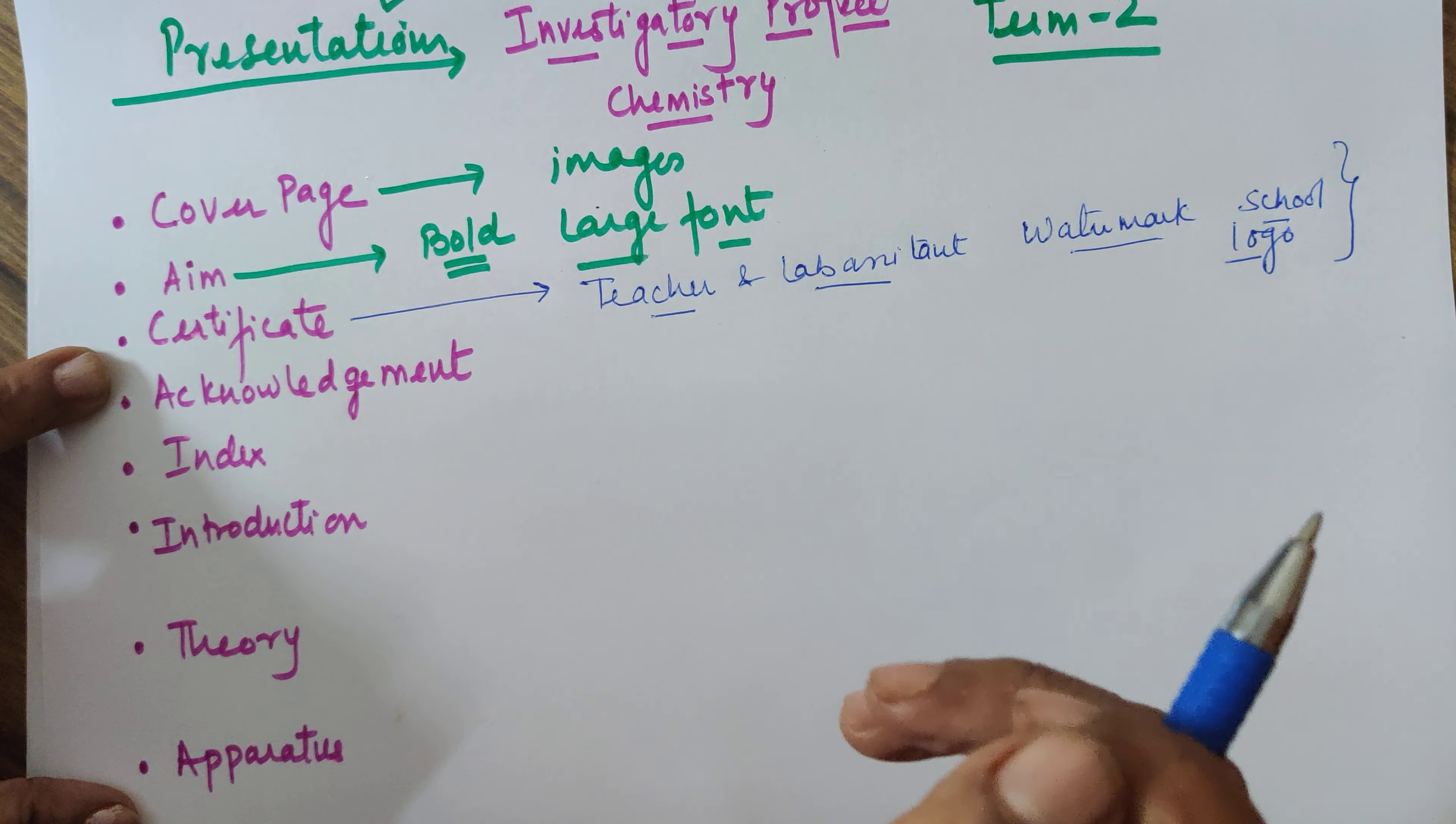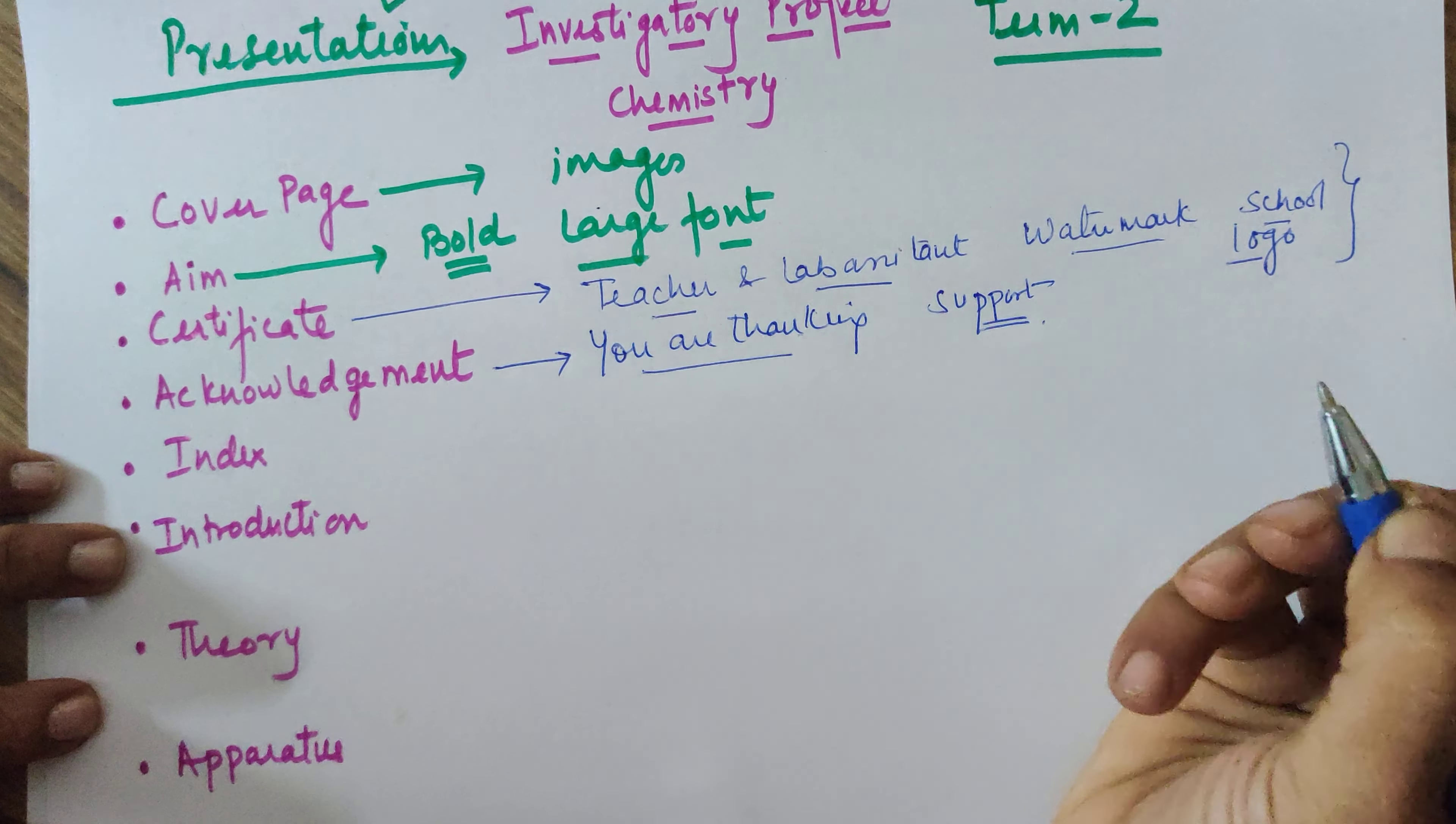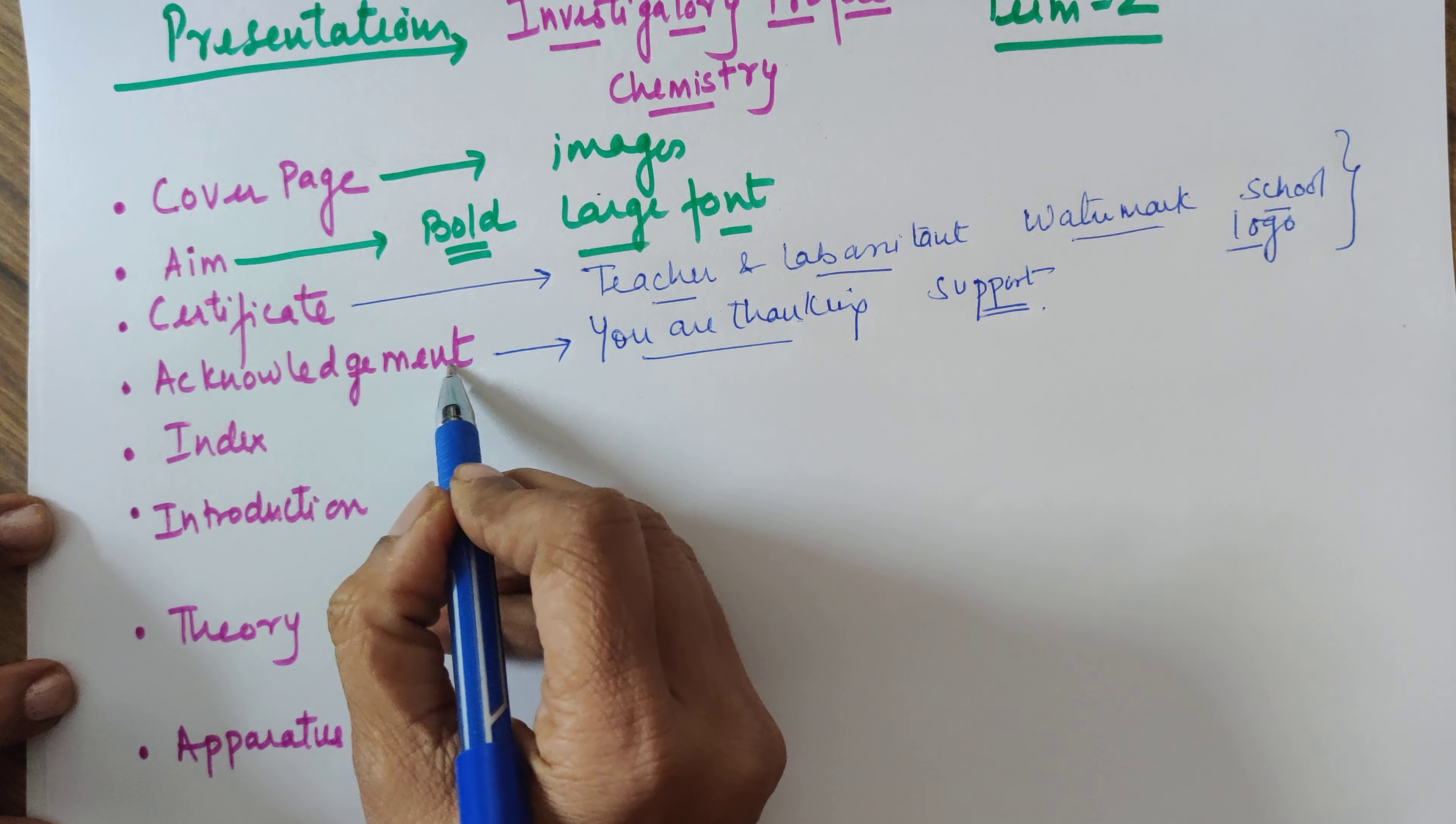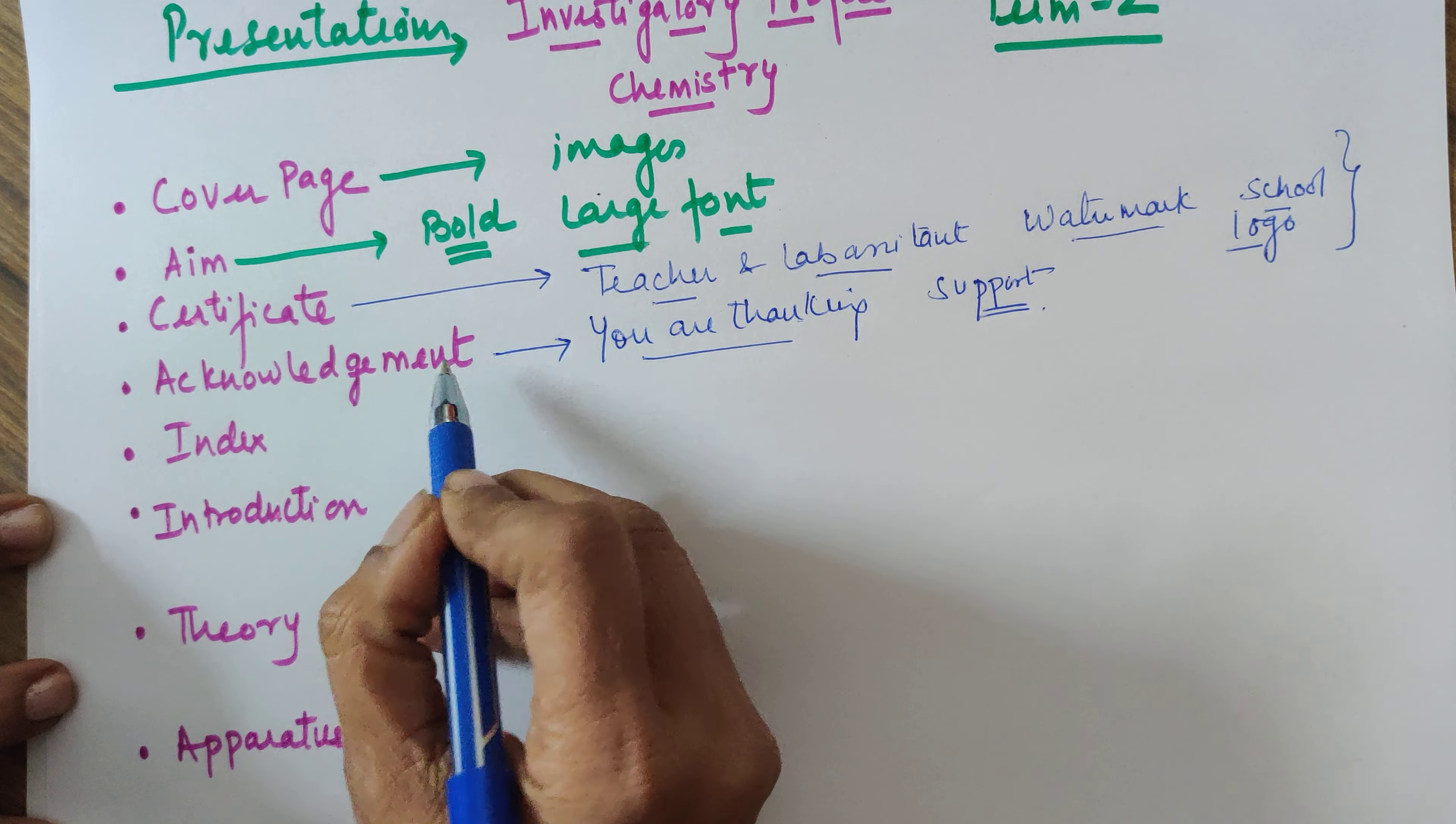Now each and everything has to be done in a single page. Aim should be one page, certificate is page number two. Next is your acknowledgement. Acknowledgement is where you are thanking your teacher and the lab assistant for all the support and guidance provided to you. That is also essential. One page for this.